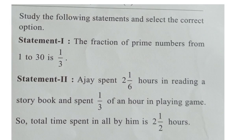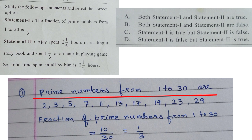Study the following statements and select the correct option. Statement 1: The fraction of prime numbers from 1 to 30 is 1 by 3. What are the prime numbers from 1 to 30?